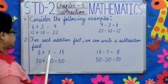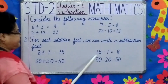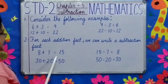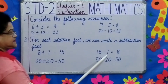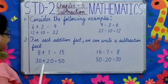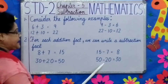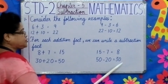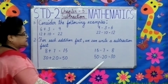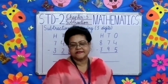8 plus 7 equals 15. 15 minus 7 equals 8. This is the addition fact and this is the subtraction fact. 30 plus 20 equals 50. 50 minus 20 equals 30. This is the addition fact and this is the subtraction fact.